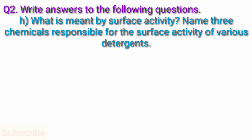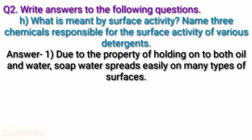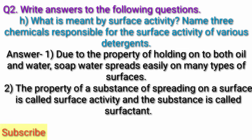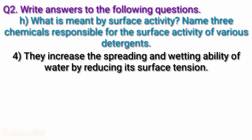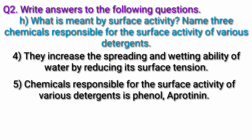Question H: What is meant by surface activity? Name three chemicals responsible for the surface activity of various detergents. Answer: Due to the property of holding onto both oil and water, soap water spreads easily on many types of surfaces. The property of a substance of spreading on a surface is called surface activity, and the substance is called a surfactant. Detergents are surface active — they increase the spreading and wetting ability of water by reducing its surface tension. Chemicals responsible for surface activity include phenol and anionic surfactants.